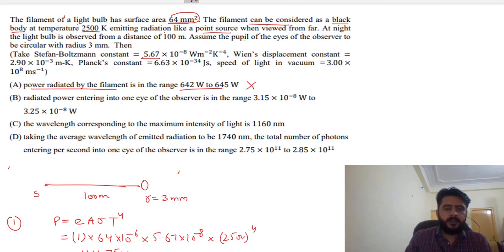Second part, Part B: the radiated power entering into the eye. How much enters? First, calculate the intensity.